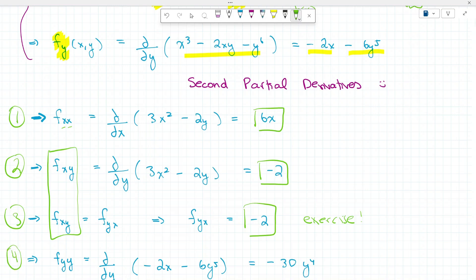Finally, for our fourth second partial derivative, we're taking the second partial derivative with respect to y, which is going to yield -30y⁴. Again, we're using power rule here to solve most of these partial derivatives, which is a nice and quick derivative rule.